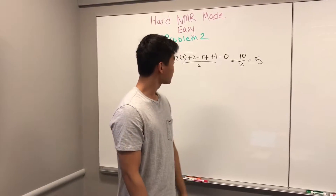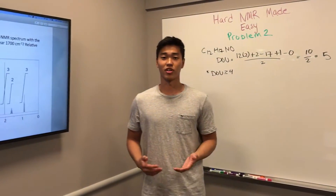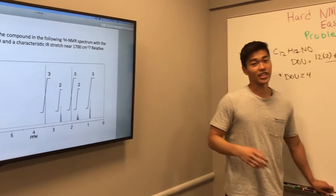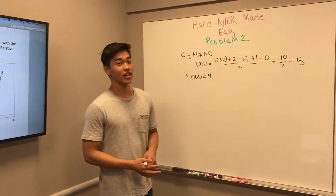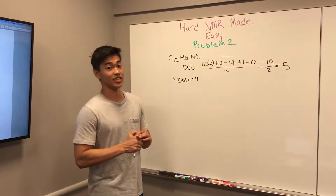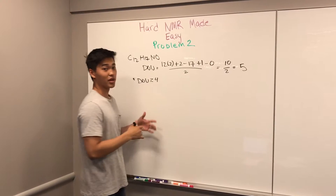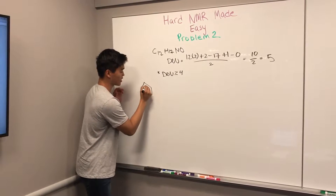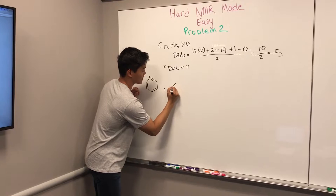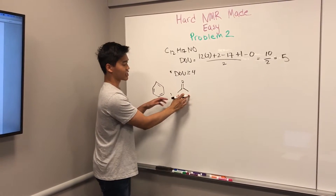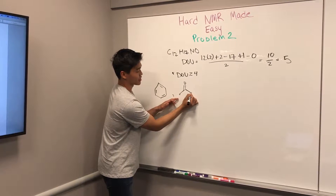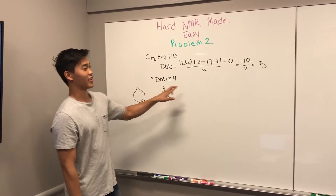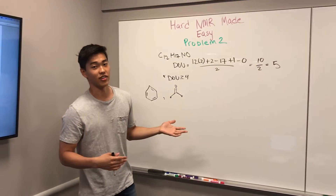The second thing we want to do is look at the question stem, because that can also tell us more about our fragments. We note that there's an IR stretch near 1700. If you look that up in your shift table, you'll note that around that area is a carbonyl. So what we have now already is our benzene from degrees of unsaturation and a carbonyl. Note that this carbonyl is most likely attached to two things on both sides. We have four degrees of unsaturation from benzene and one from the carbonyl, giving us a total of five — so right off the bat, we get rid of all the DOUs.